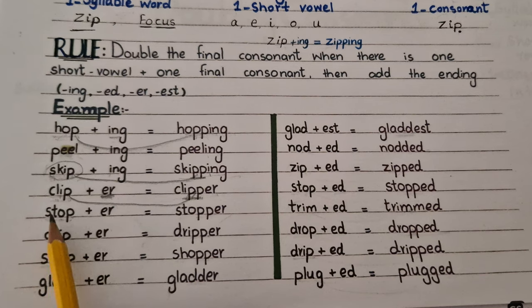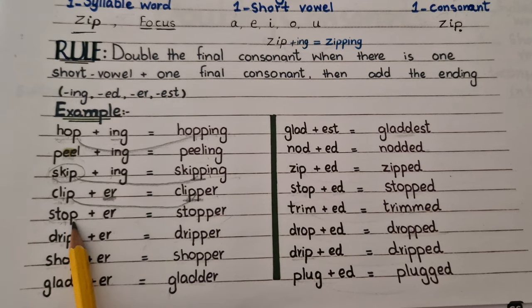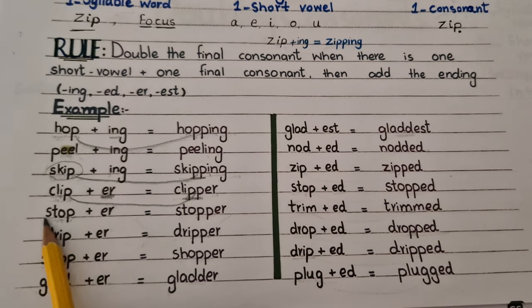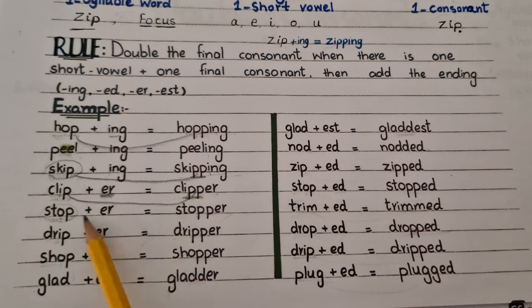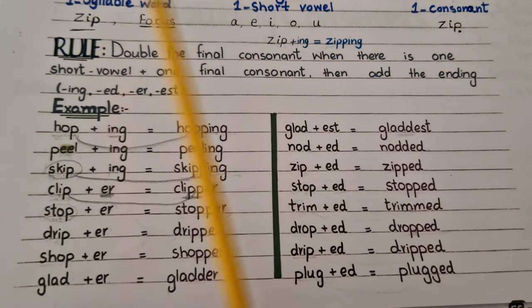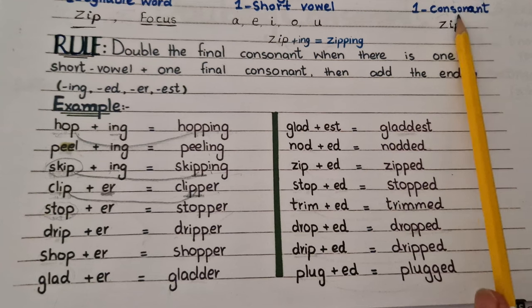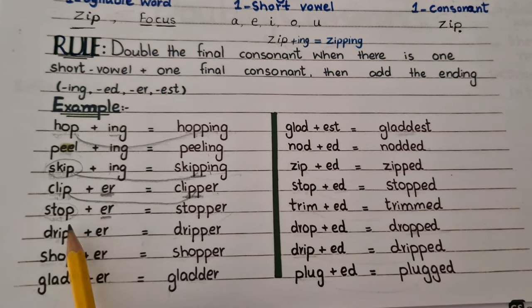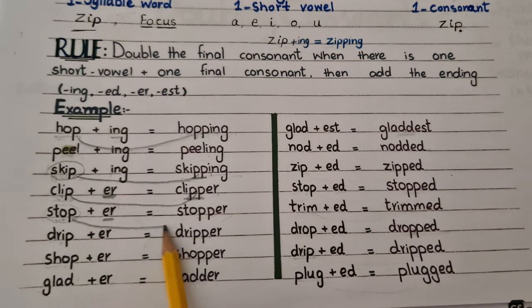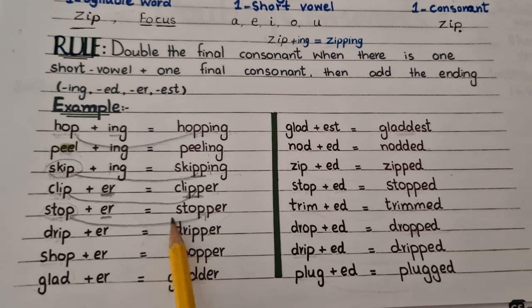'Stop' is a one-syllable word, and it also has one short vowel and a final consonant. So this word follows the 1-1-1 rule — it has one syllable, one short vowel, and one consonant. When we add a suffix at the end of the word, we will double the final consonant. 'Stop' becomes 'stopper'.